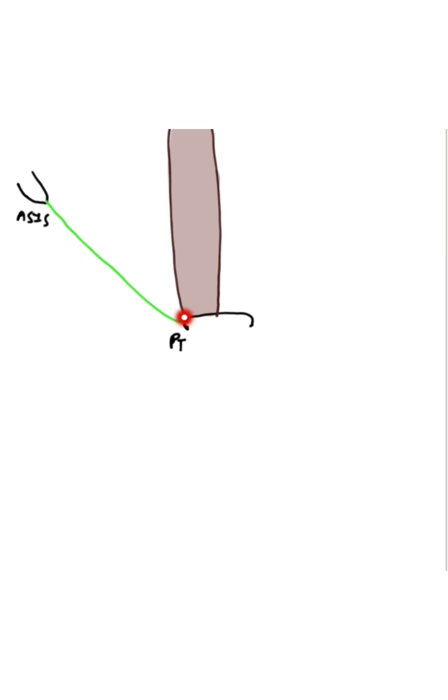Medial boundary is formed by lower 5 cm of lateral border of rectus abdominus muscle. Lateral boundary is formed by inferior epigastric artery. Inferiorly, medial half of Inguinal Ligament.